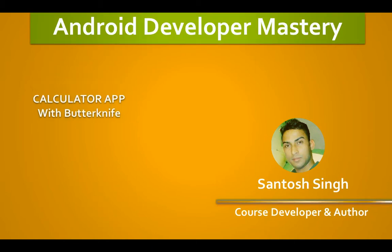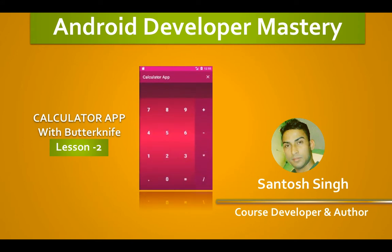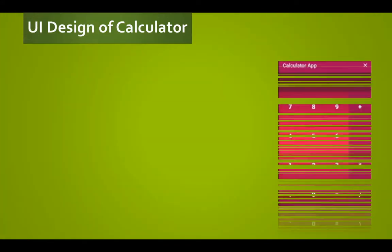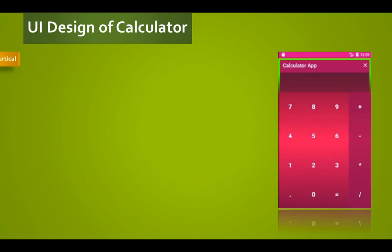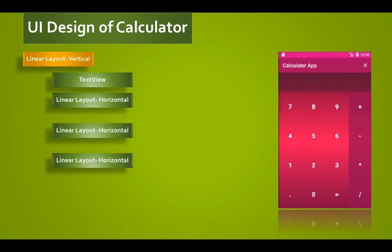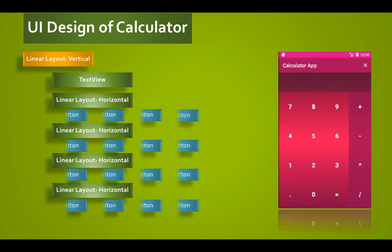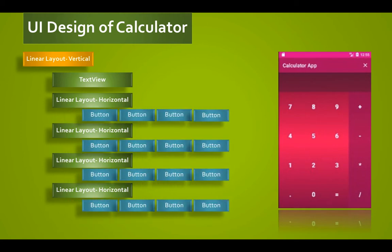Hi there, I'm Santosh Singh and welcome to Android Developer Mastery. In this part we are going to talk about a calculator app with button style. This is a design based on LinearLayout with vertical orientation, containing one TextView with four sub LinearLayouts with horizontal orientation, and each of them has four buttons. Additionally, we have a menu item clear icon to clear TextView values.